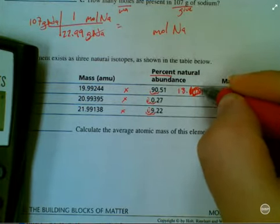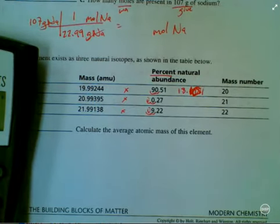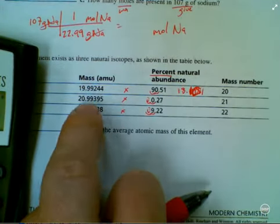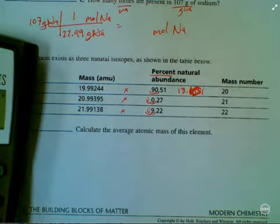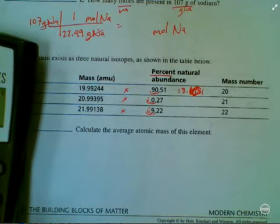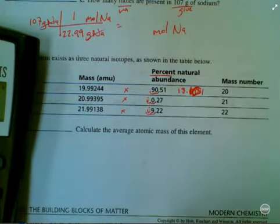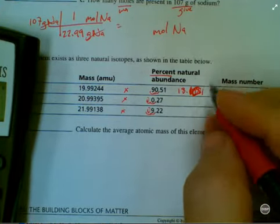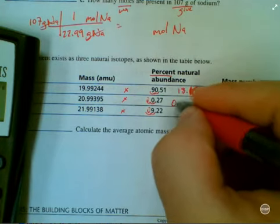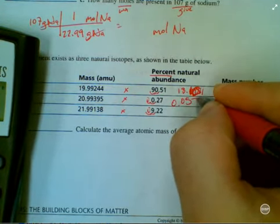Let's go next up, 20.99395 times 0.0027. This one only has two significant figures, so go there.